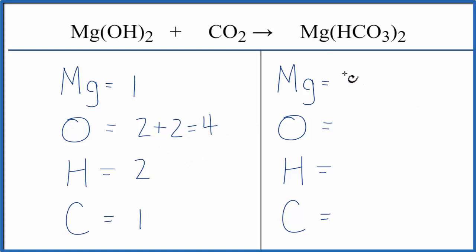On the product side, we have 1 Mg. And again, the 2 applies to everything in parentheses. So we have 2 times the 1, that gives us 2 hydrogens. 2 times the 1, 2 carbons. 2 times the 3, 6 oxygens.